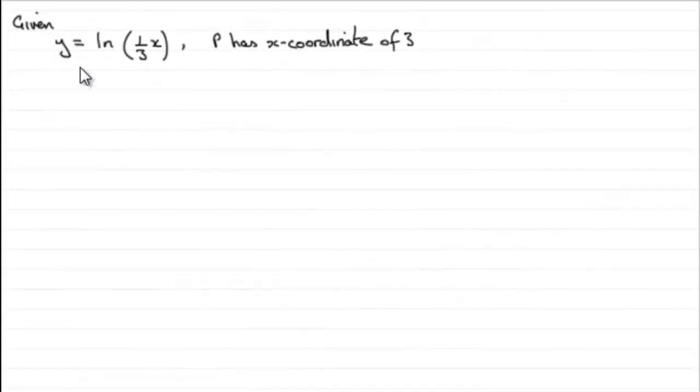Okay, we're given that y equals the natural log of one-third x and asked to find the equation of the normal at this point P which has x-coordinate of 3. So how would you go about doing something like this?